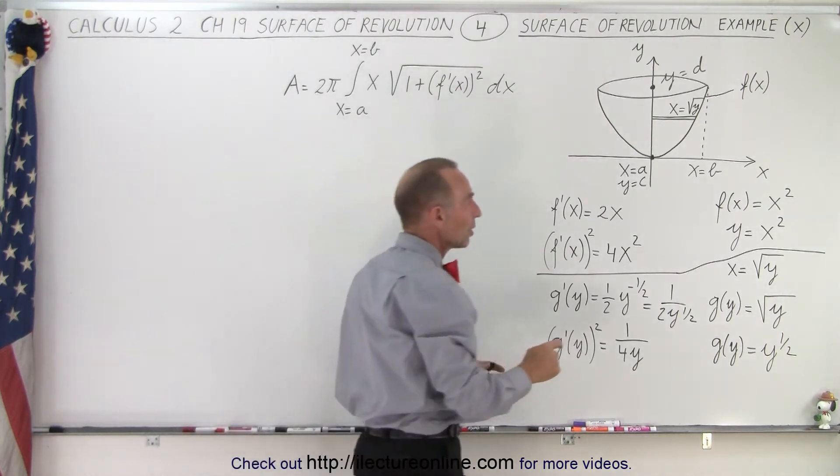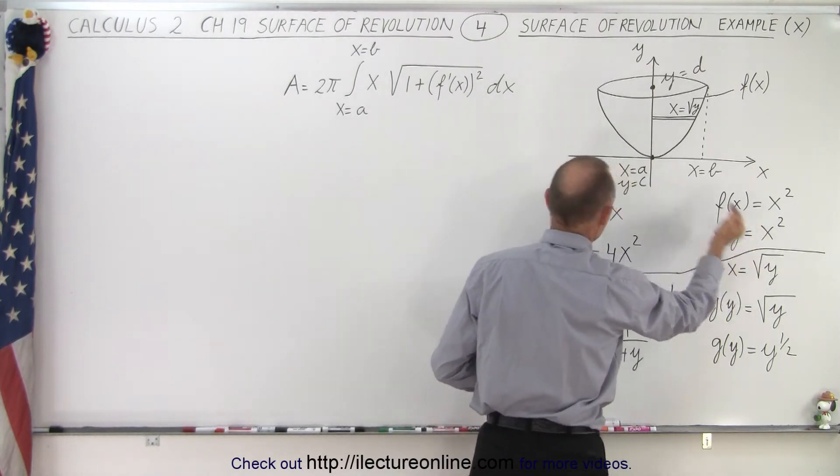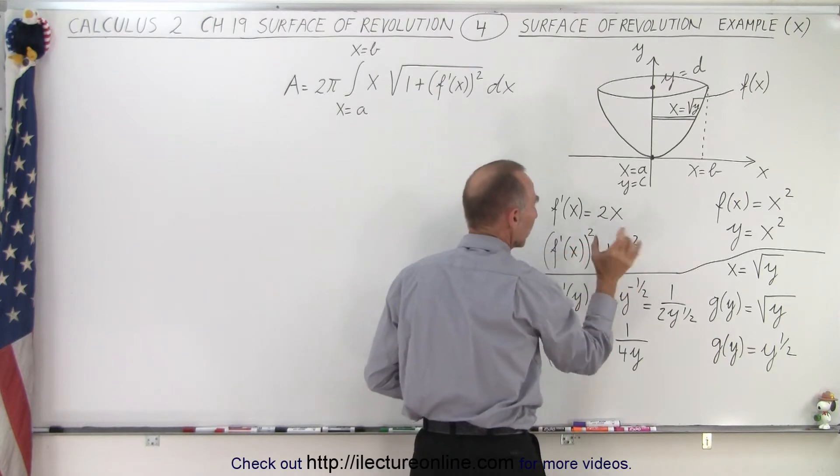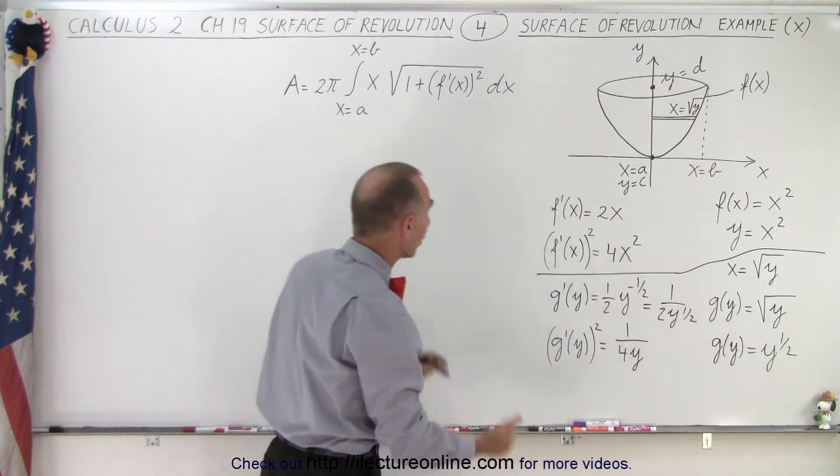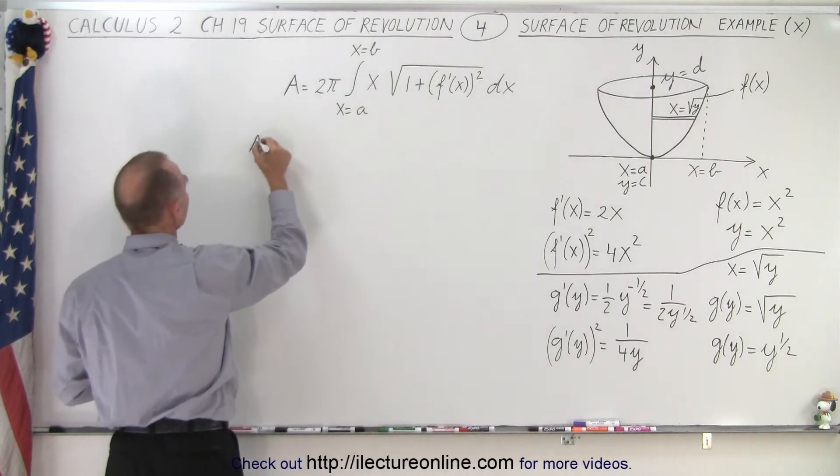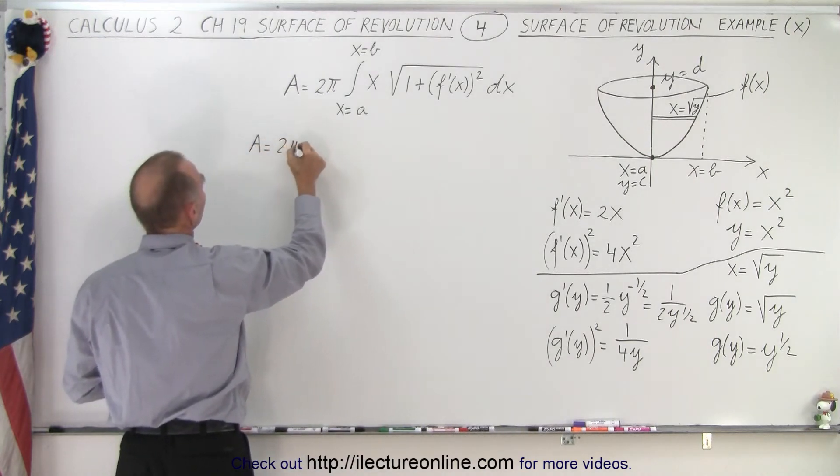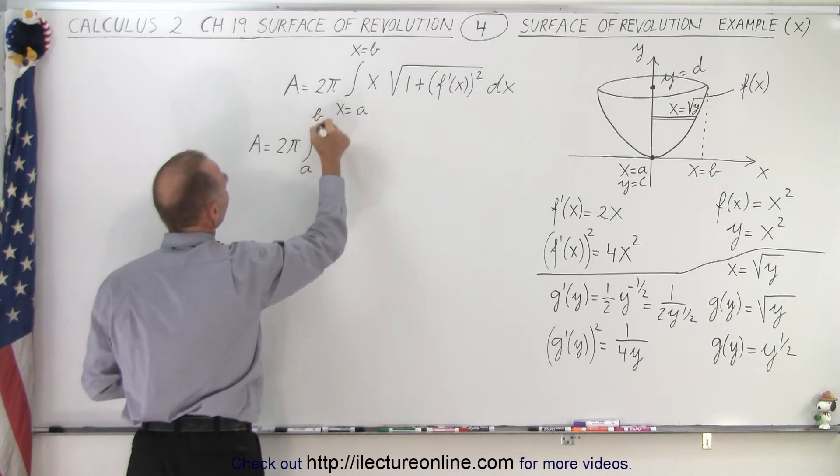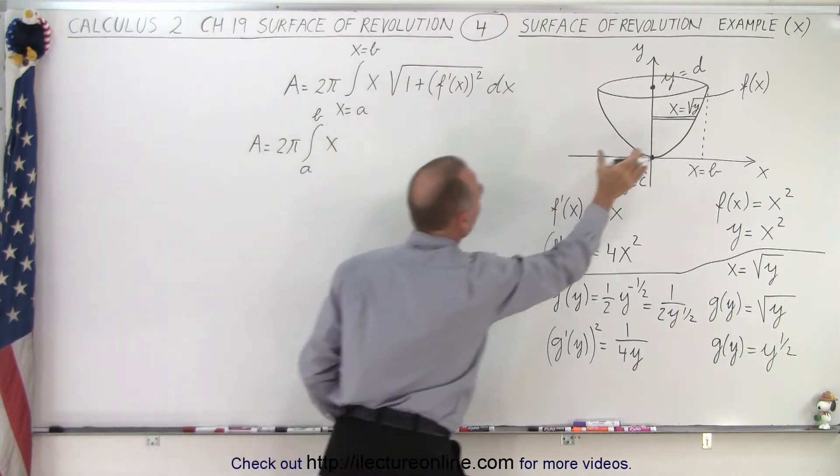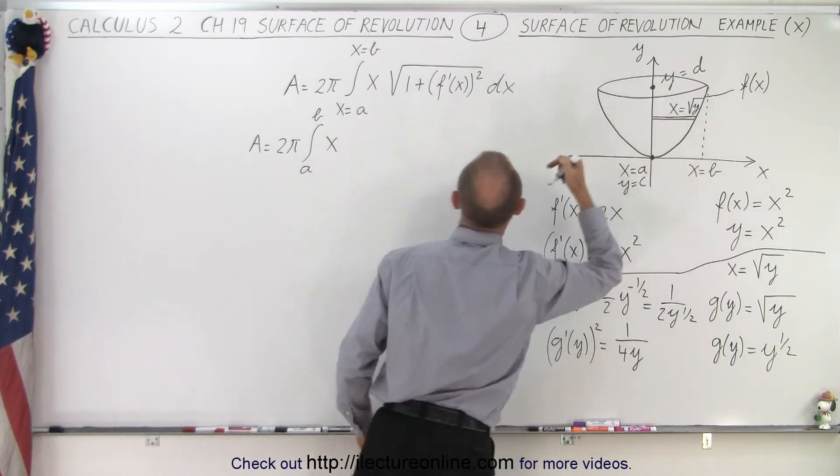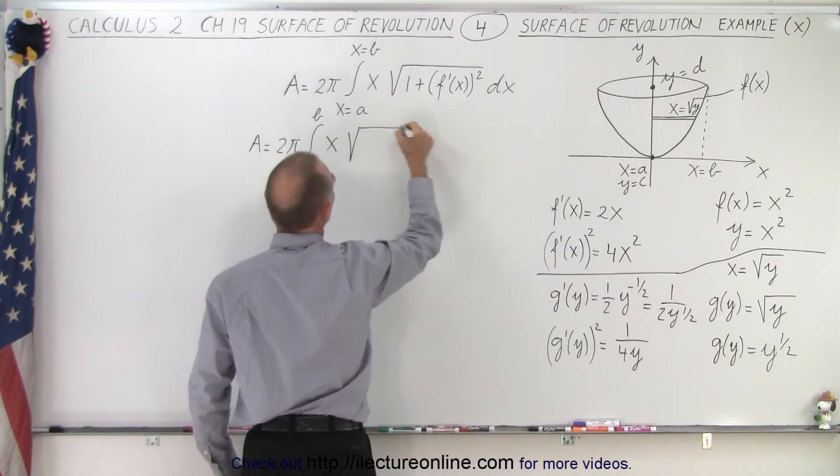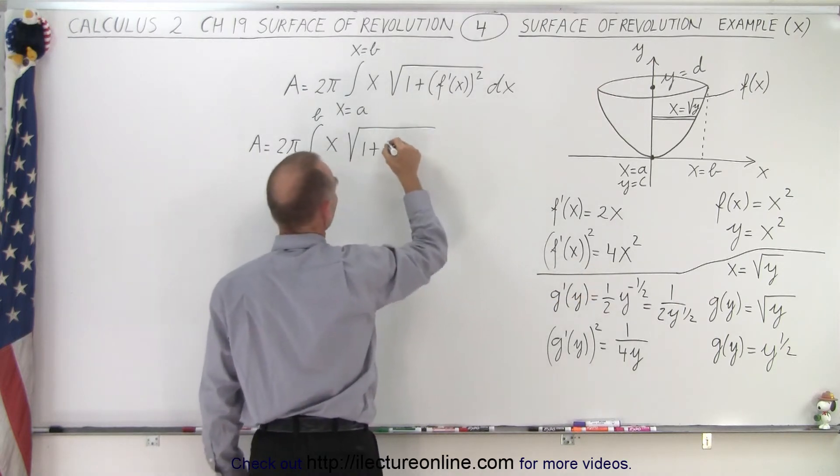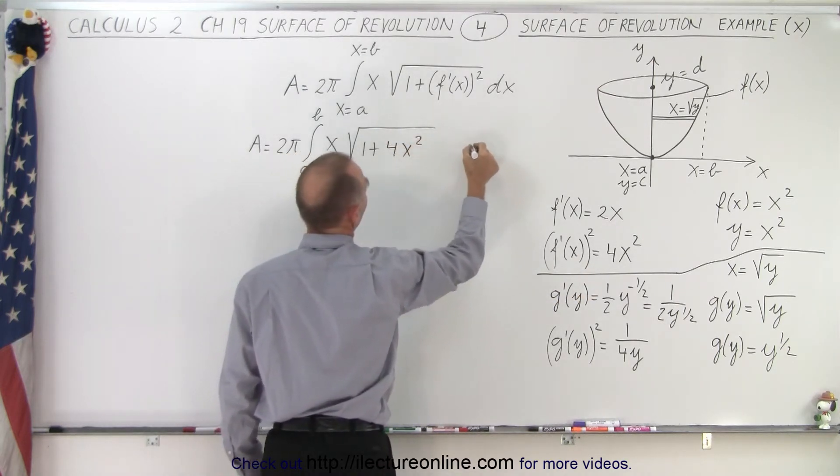So we use the equation f(x) equals x squared, y equals x squared. We take the derivative of that, we get 2x, and we square the derivative and get 4x squared. So we're going to plug all that in here and we get therefore that the area is equal to 2π times the integral from a to b. Now these are x limits, times x because x is the radius of that revolution, and times the square root of 1 plus the derivative of the function squared, which is 4x squared, times dx.